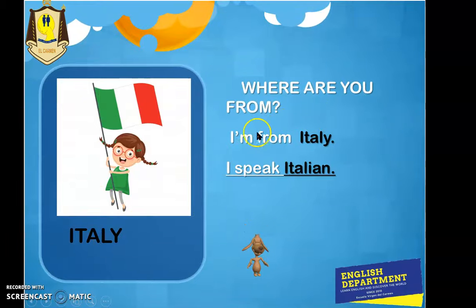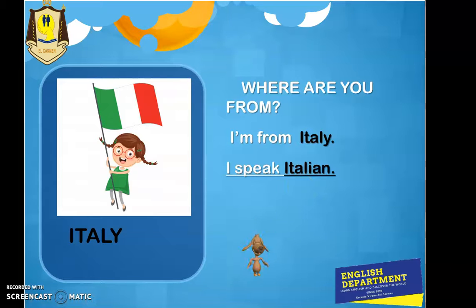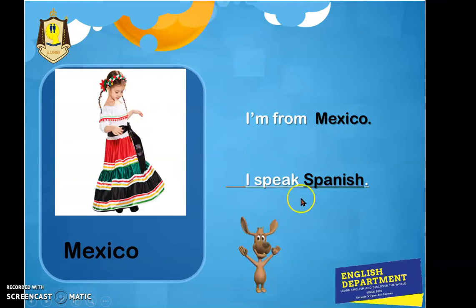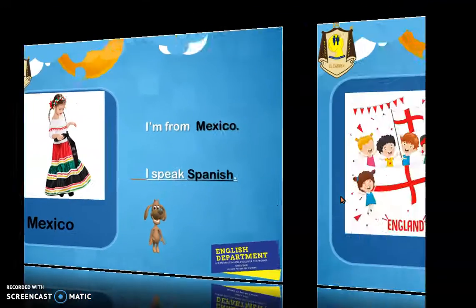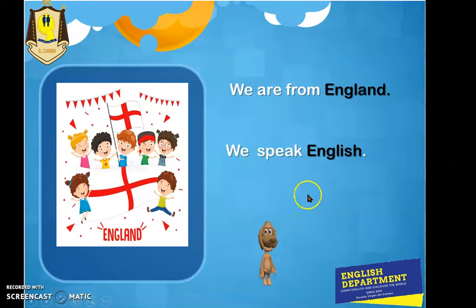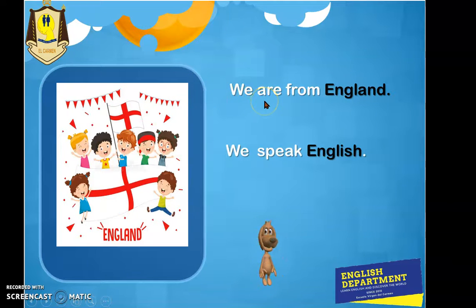Italy. Where are you from? I'm from Italy. I speak Italian. Les recuerdo, chicos y chicas, que deben ir repitiendo cada una de las frases y palabras que estamos viendo, e ir dibujando y escribiendo en su cuaderno todo lo que aparece en el video. Let's continue. Mexico. Where are you from? I'm from Mexico. I speak Spanish. The country is England. Where are you from? We are from England. We speak English. Somos de Inglaterra y hablamos inglés. Usamos 'we are' porque nos referimos a 'nosotros somos'. We are from England. We speak English.